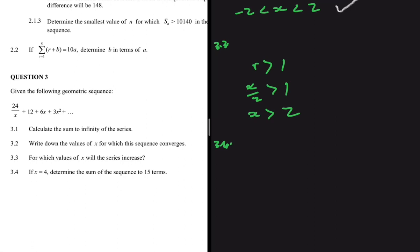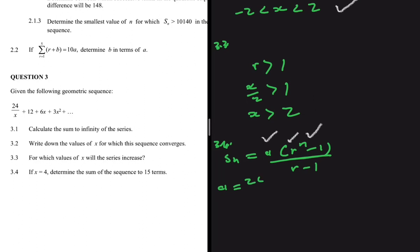For 3.4: if x equals 4, determine the sum of the sequence to 15 terms. The formula for the sum of n terms is Sₙ = a(rⁿ − 1) divided by (r − 1). We need a, r, and n. Since x = 4, a = 24 divided by 4 = 6. And r = x divided by 2, so r = 4/2 = 2.